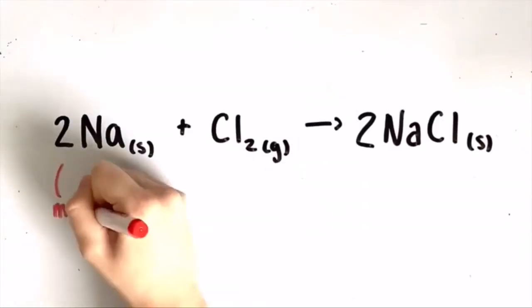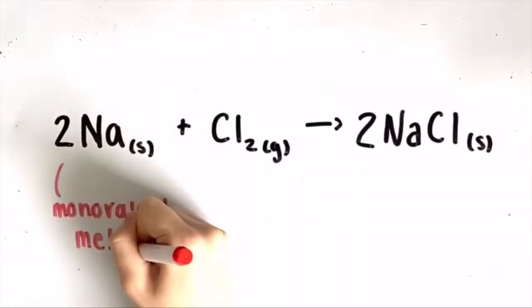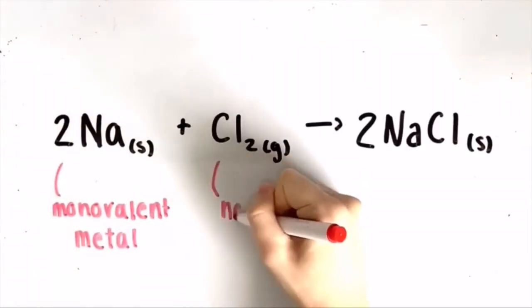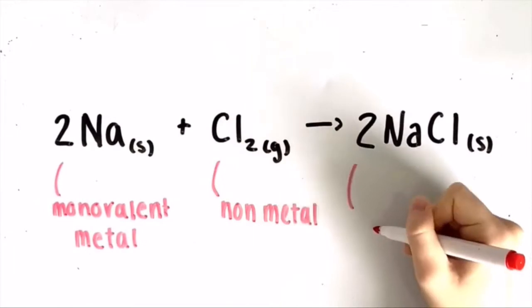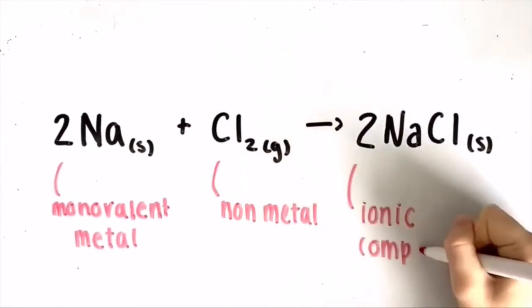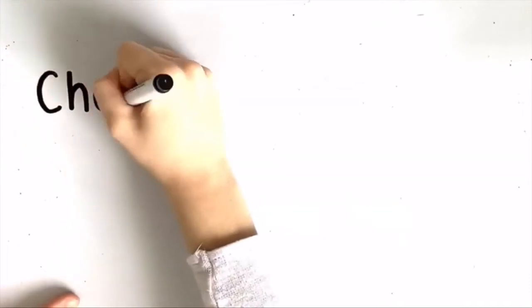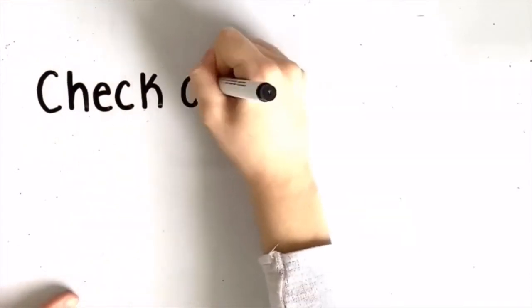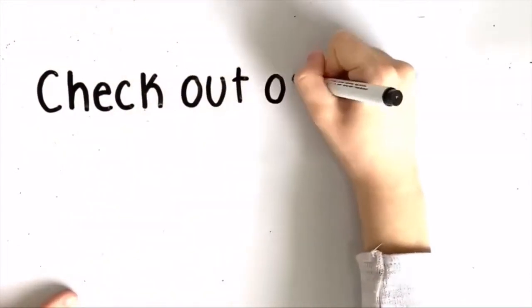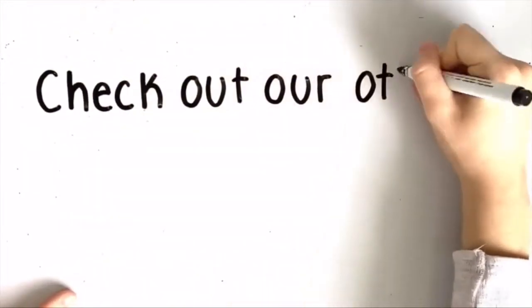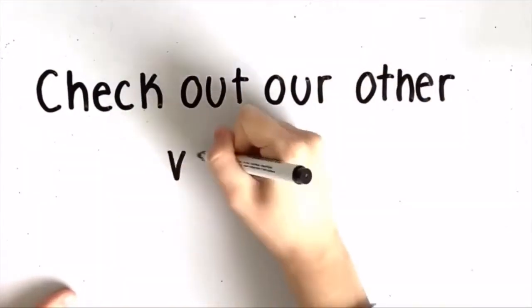An example of a monovalent metal reacting with a non-metal to form an ionic compound is sodium plus chlorine yields sodium chloride. If you are unsure as to how we balance the equation or why the elements have certain states, make sure to check out our other videos on balancing chemical equations and how to figure out the states of an element or compound.